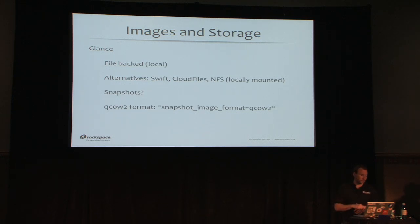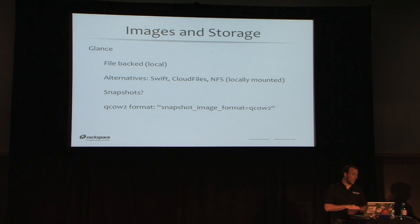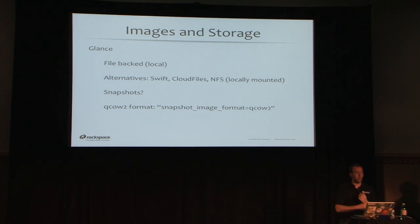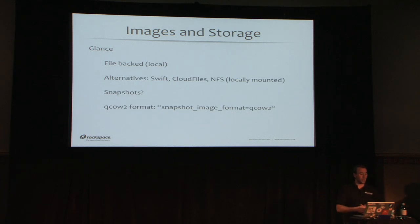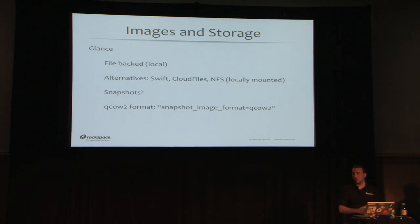Glance is the service that provides images for compute nodes to boot instances. File-backed storage will be the most common option until it becomes unrealistic at scale. Alternatives include Swift internally, Rackspace Cloud Files, S3, or NFS mounted locally. As far as performance goes, file-backed local is your best bet, but you're limited by how much space that one physical server has.